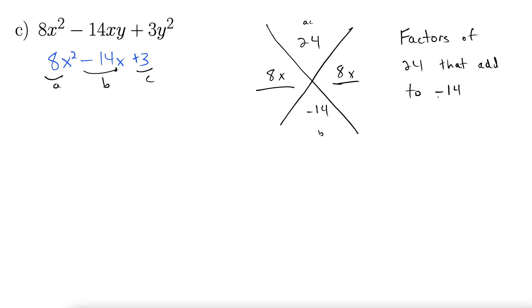So let's start listing the factors of 24. Maybe you can jump right to it. I'll just go slowly here. 1 times 24. Well, those don't add to 14. 2 times 12. Yes. 2 plus 12 is 14. So we're in the right ballpark here. Let's just tweak the signs a little bit.